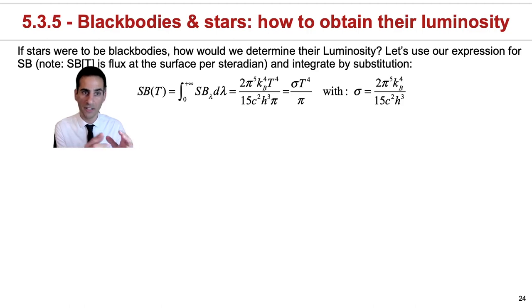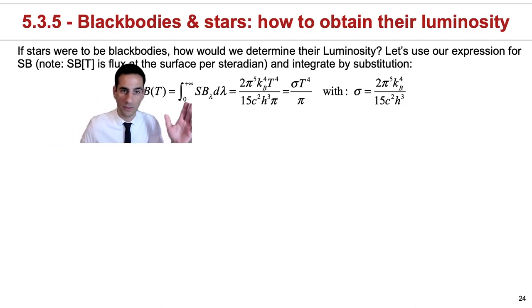The first thing that we're going to do when we have surface brightness that depends on temperature but that also has a dependence on wavelengths is to integrate it, and this is what you're seeing here for all wavelengths. So we're taking the integral of the blackbody curve.